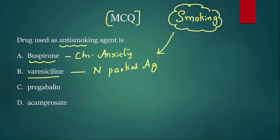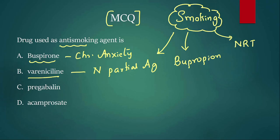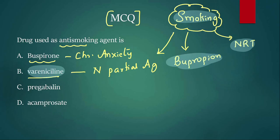Varenicline is a nicotinic partial agonist used for smoking cessation. Apart from that, bupropion is also used. The third option is nicotine replacement therapy — giving nicotine in the form of patches, lozenges, gums, or inhalers. Among these three — varenicline, bupropion, nicotine replacement therapy — tell me in the comment section which is the most effective treatment for smoking cessation.